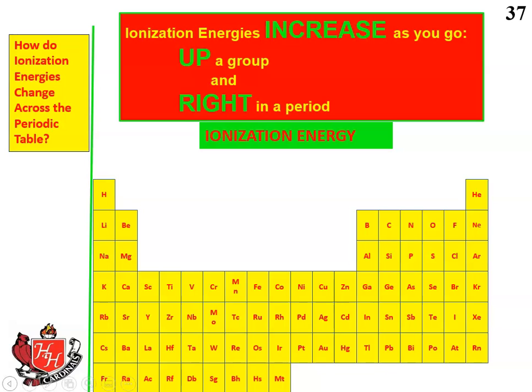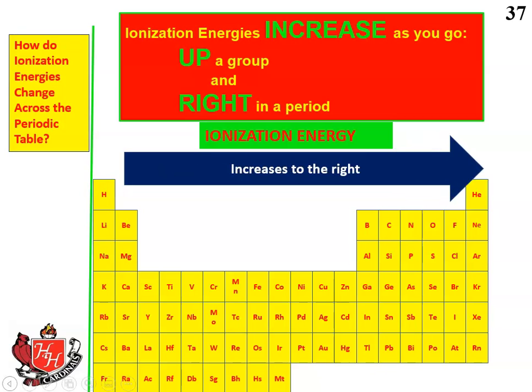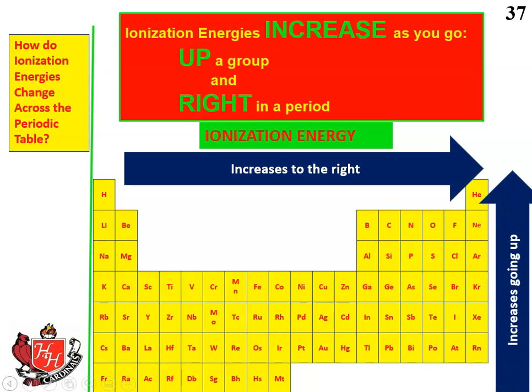Ionization energies increase as you go up a group and as you go to the right in a period. A period is a row, and a group is a column. So as you go up, that also increases the ionization energy. The highest ionization energies are in the upper right, and the lowest are in the lower left.